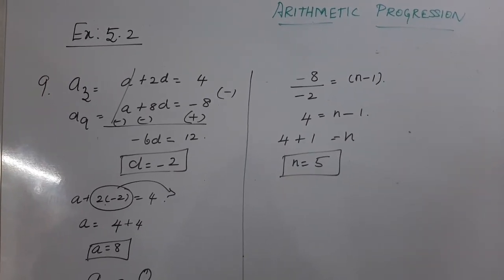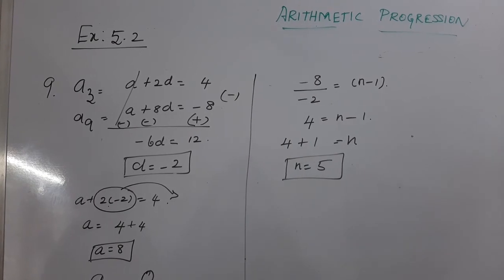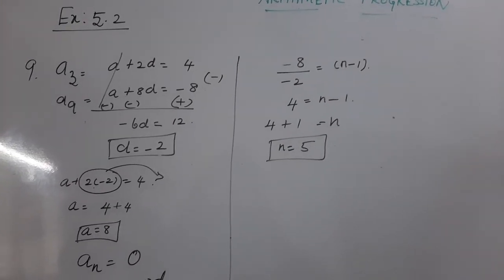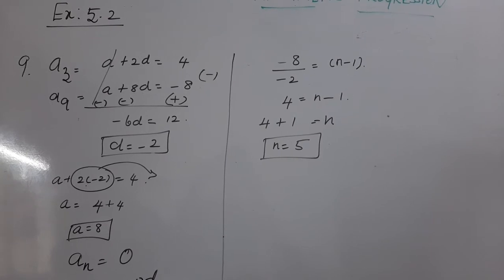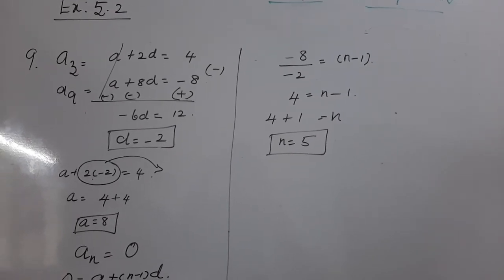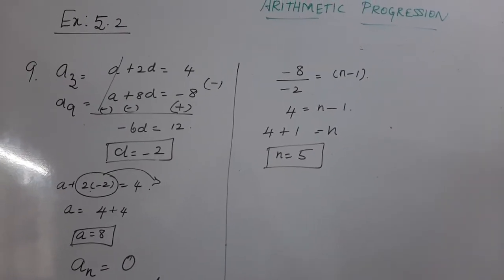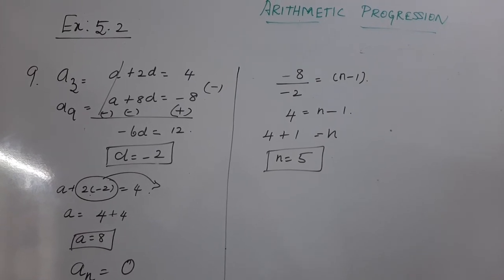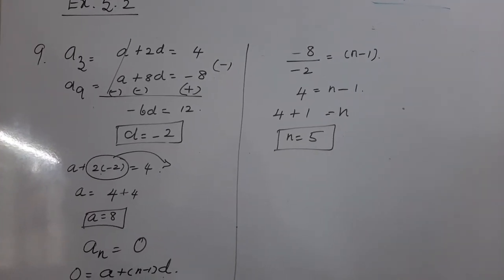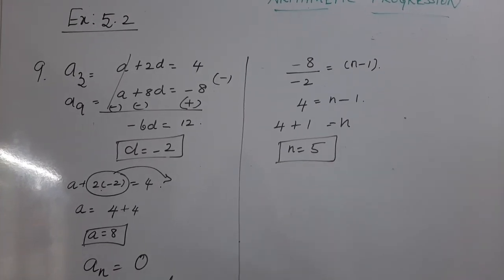This is the second method of sum in exercise 5.2. Two terms of the AP were given, we wrote linear equations, solved for A and D, then considered 0 as the Nth term and found N = 5. In 5.2, there are three different methods.